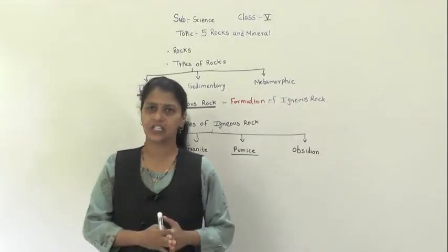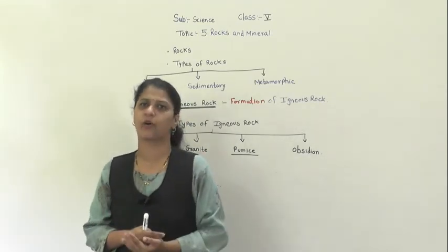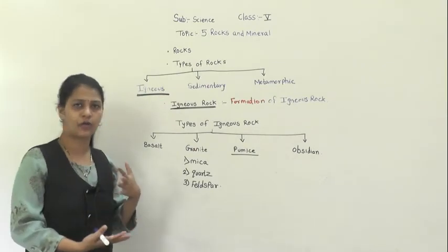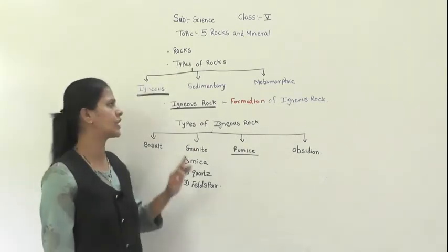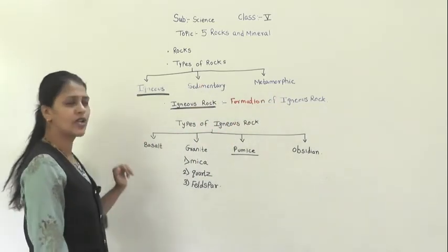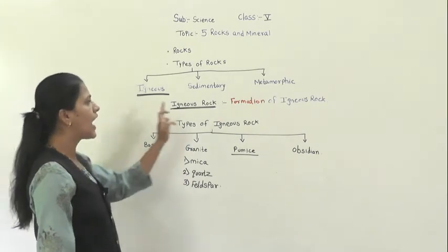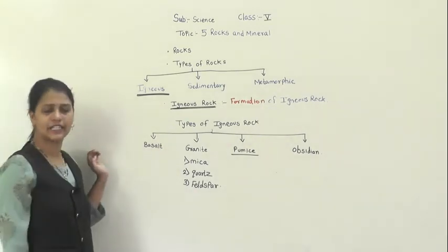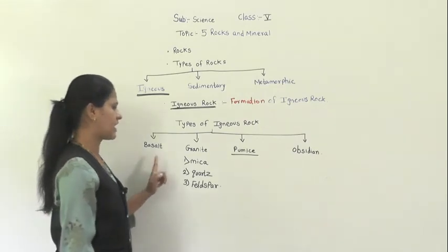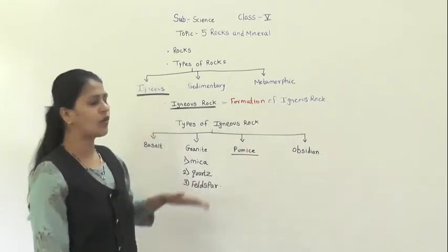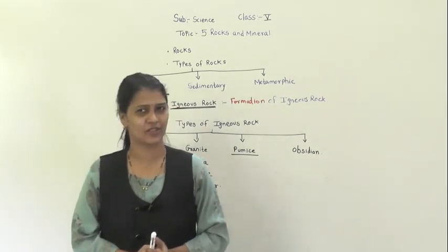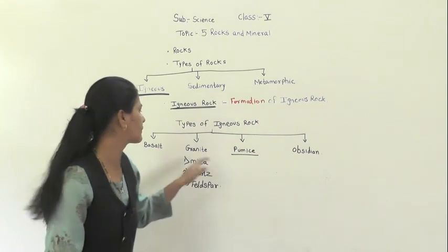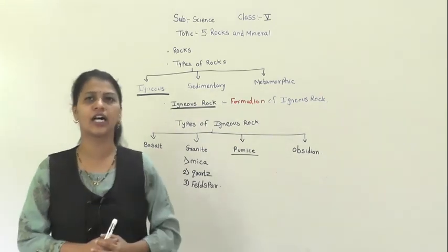In today's video, we have discussed igneous rocks and how they are formed. We covered the three types of rocks — igneous, sedimentary, and metamorphic — and focused on the four types of igneous rocks: basalt, granite, pumice, and obsidian, along with their uses. Today's homework is to read the lesson thoroughly and write the uses of these types of rocks in your science notebook. Thank you!